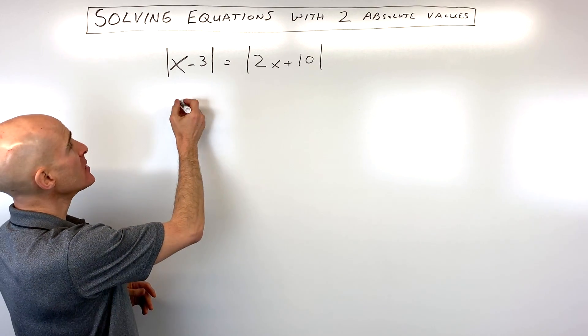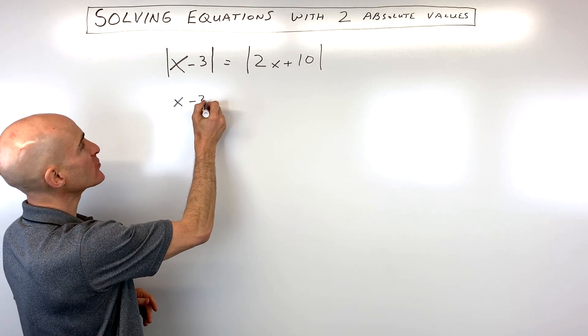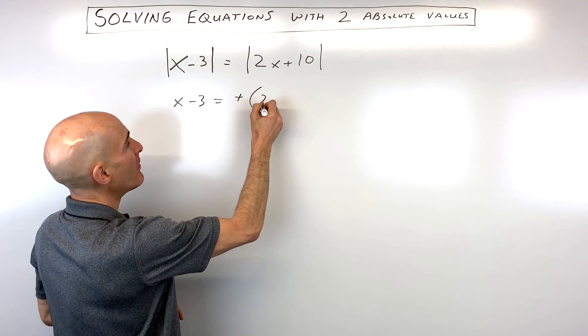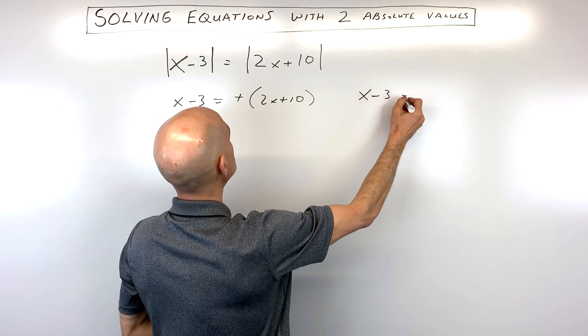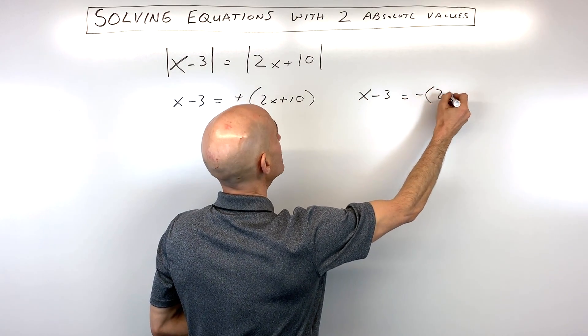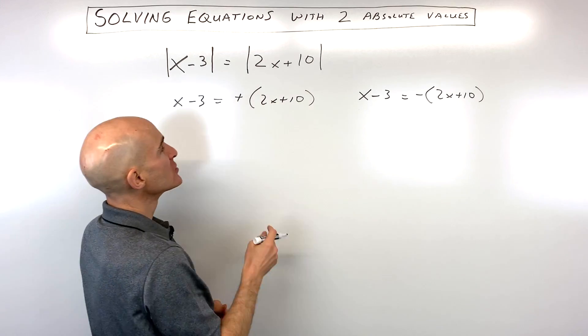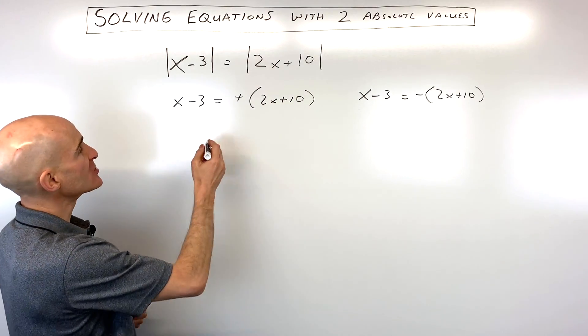We're going to do the latter. So we're going to say x minus 3 equals positive 2x plus 10, and we're also going to solve x minus 3 equals the opposite of 2x plus 10. Let's go ahead and solve these two equations separately.